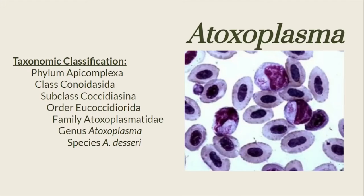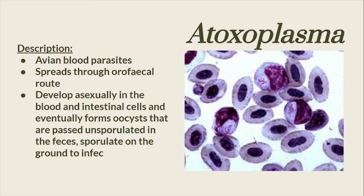The next species is Atoxoplasma deseri. Atoxoplasma deseri is a known avian blood parasite. It develops sexually in the blood and intestinal cells, which eventually forms oocysts that are passed and sporulated in the feces. It will sporulate on the ground to infect new hosts.